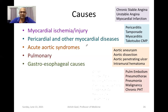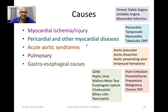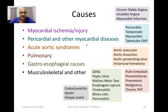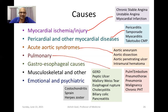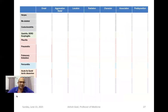There are gastroesophageal causes including GERD, peptic ulcer disease, Mallory-Weiss tear, esophageal rupture, cholecystitis, biliary colic, and pancreatitis. There are musculoskeletal and other disorders such as costochondritis, sprain, and herpes zoster, and an emotional or psychiatric component. A color scheme is used: myocardial injury in purple, pericardial and other myocardial diseases in blue, aortic syndromes in brown, pulmonary causes in red, gastroesophageal in green, and musculoskeletal in gray and black — carried across the table in the next slide.